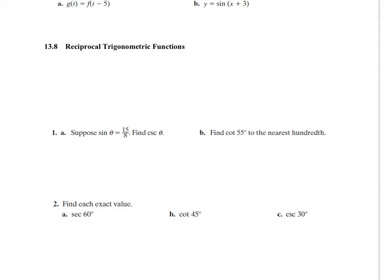The reciprocal of a number 2 would be 1 over 2. So reciprocal trigonometric functions are, if you have cosine, the reciprocal of cosine is 1 over cosine.